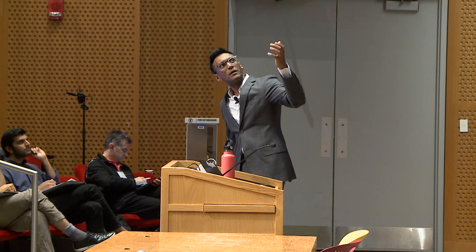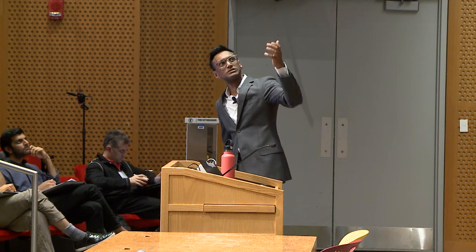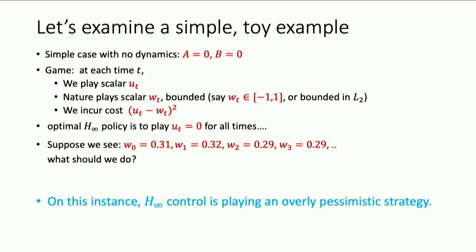If you think about this, the best thing you could do in a min-max sense is to always say 0. Because if you say something different from 0, nature is going to give you a higher cost — for example, if we say 0.5, nature will say minus 1 and we'll pay 1.5 squared. So the best we can do is always play 0. But suppose we're playing this game and we observe something like 0.31, 0.32, 0.29 — basically things that seem to be around 0.3.